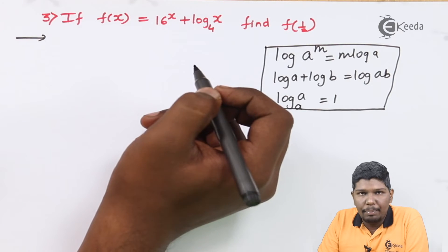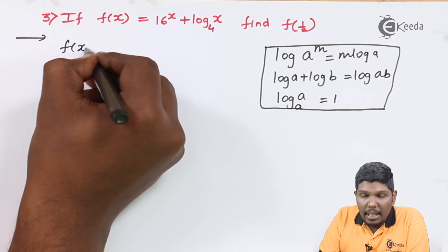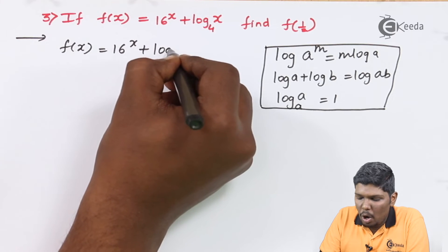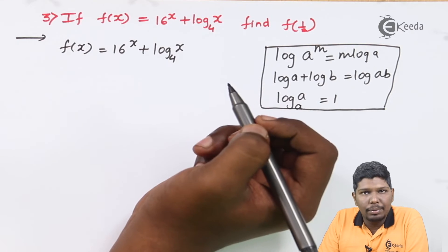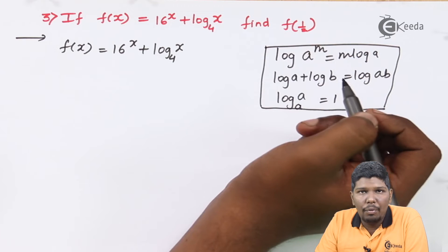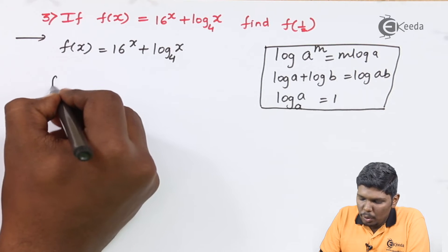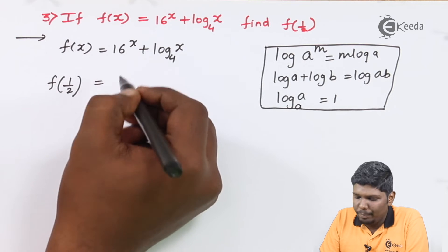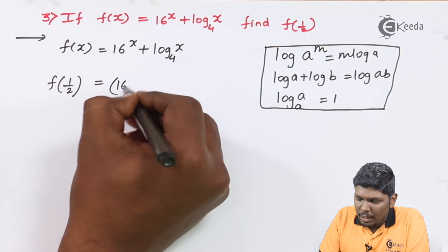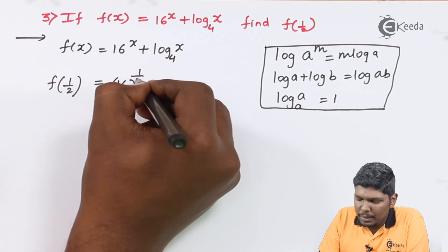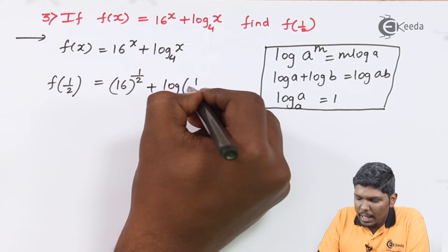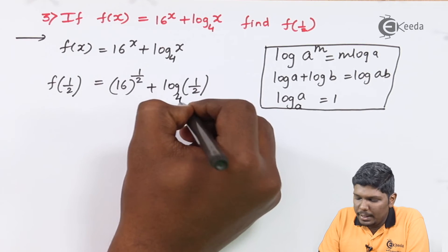Now we will start with the problem. f(x) is given as 16 raised to x plus log of x to the base 4. We need to find f of 1/2. So to find f of 1/2, we will replace x by 1/2. This becomes 16 raised to 1/2 plus log of 1/2 to the base 4.